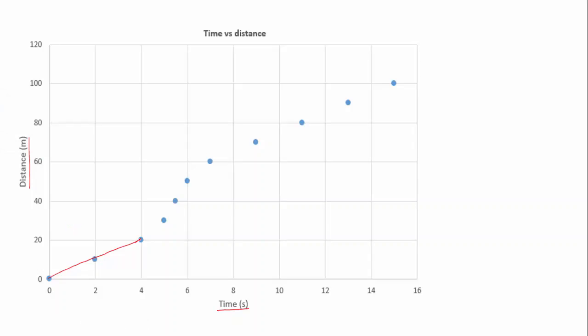You can see that for the first four seconds the runner was going at a constant speed because the line is straight. But then the line gets steeper. This indicates the runner got faster. And then later at about seven seconds they slowed down again.